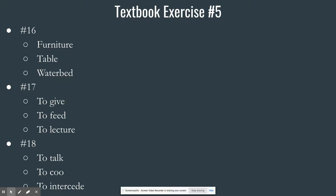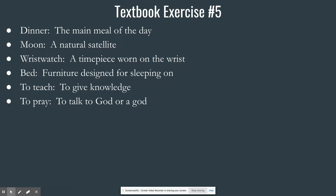Number eighteen: to pray. Pray is a type of talking, and another type of talking would be to coo — like talking to a baby. To intercede is also a type. What do you do when you pray? You praise, you request, you confess, you think — all of those are fine. For numbers 19 through 24, you used the genus you chose in your own definition. For example: dinner — the main meal of the day; moon — a natural satellite; wristwatch — a timepiece worn on the wrist; bed — furniture designed for sleeping on; to teach — to give knowledge; to pray — to talk to God.